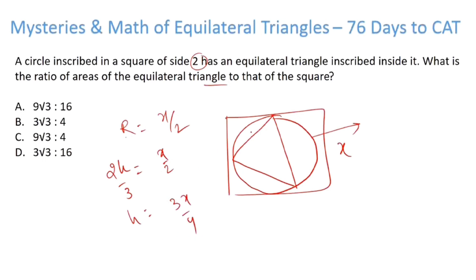We know that in terms of the side a, h is root 3 by 2a. So that is given to us as 3x upon 4. So this cancels and this cancels. So a is root 3x by 2. So what's the area? Area is root 3 by 4a square, so 3x square by 4. And what's the area of the square? Area of the square is x square. So x square cancels to 3 root 3 upon 16.